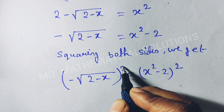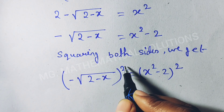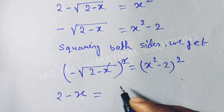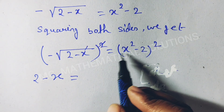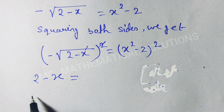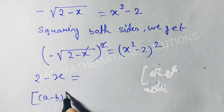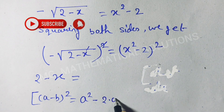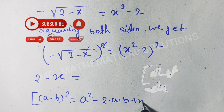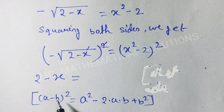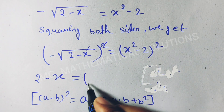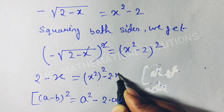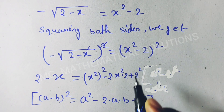The minus whole squared means plus squared, and the root is cancelled. So: 2 minus x equals the expansion of (x squared minus 2) whole squared. We use the formula (a minus b) whole squared equals a squared minus 2ab plus b squared. Here, a means x squared and b means 2. So we get: x to the power 4 minus 2 times x squared times 2 plus 2 squared.